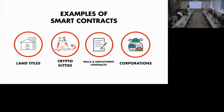CryptoKitties is a smart contract that creates a virtual collectible cat that you can sell and trade. The British Columbia securities regulator ruled that CryptoKitties are not a security — they are a new asset class called CryptoCollectibles. That's because there's no expectation that they will increase in value. Obviously some do, which is a little nuts. But in that sense, they're more similar to Beanie Babies than they are to stocks.